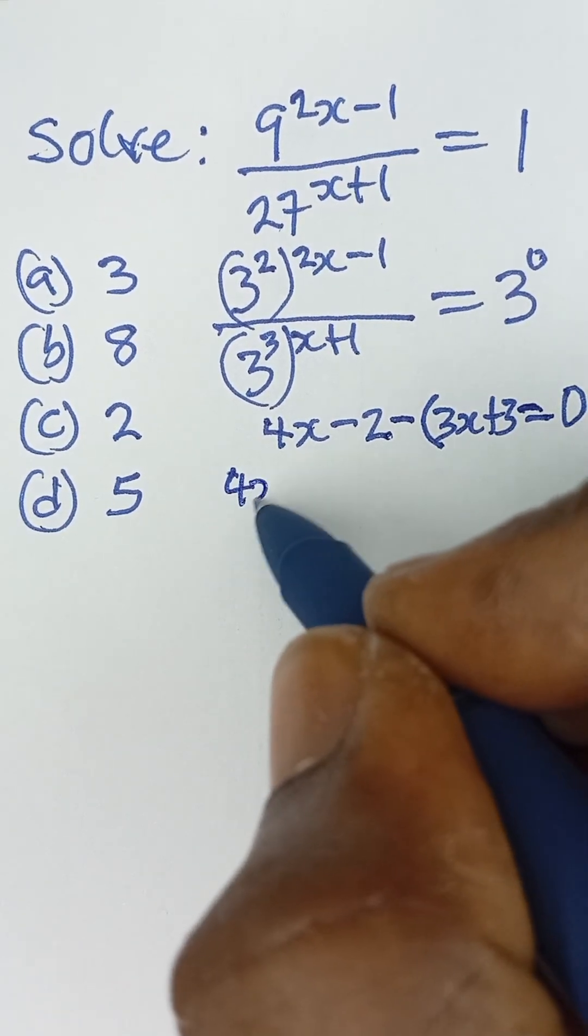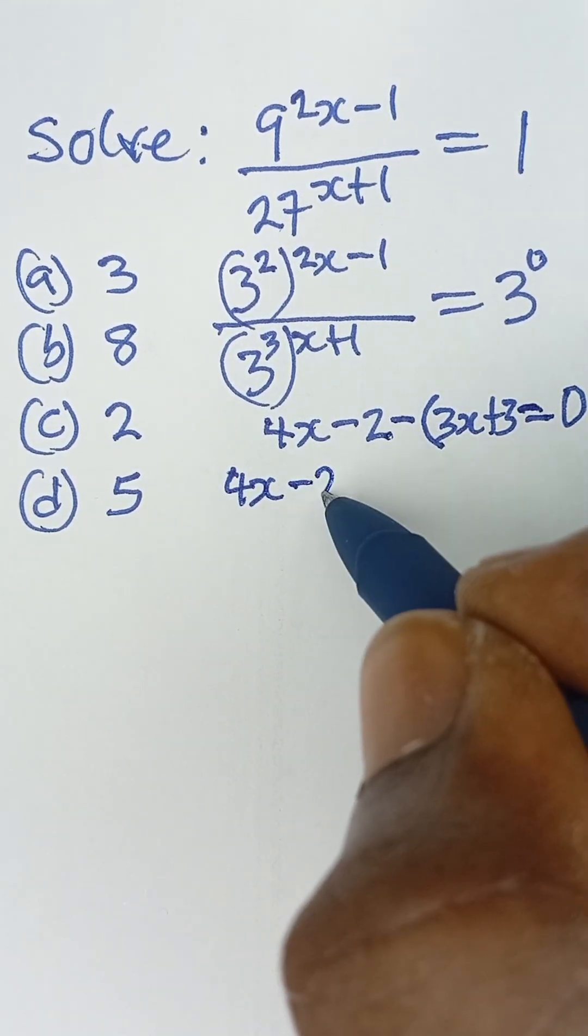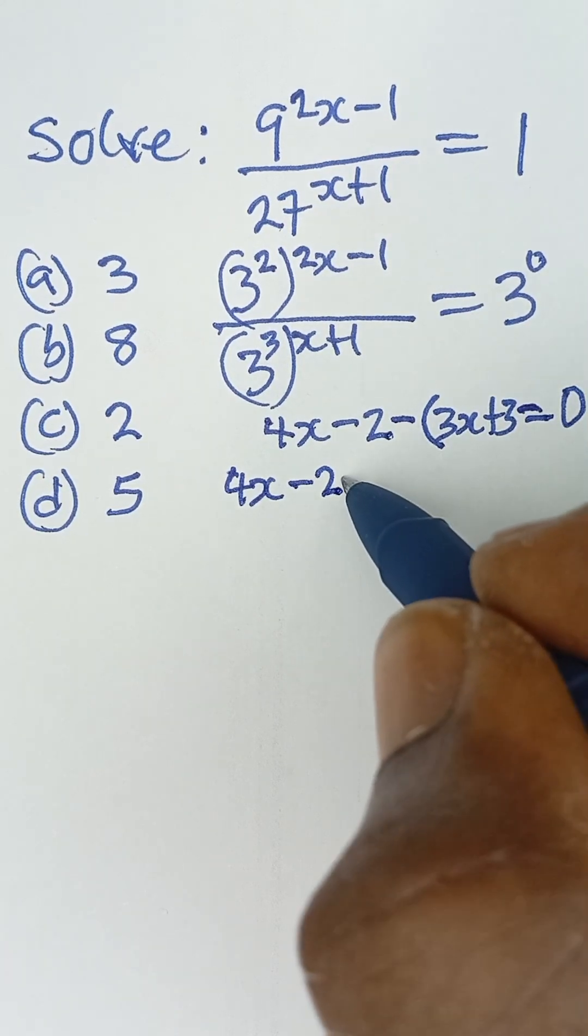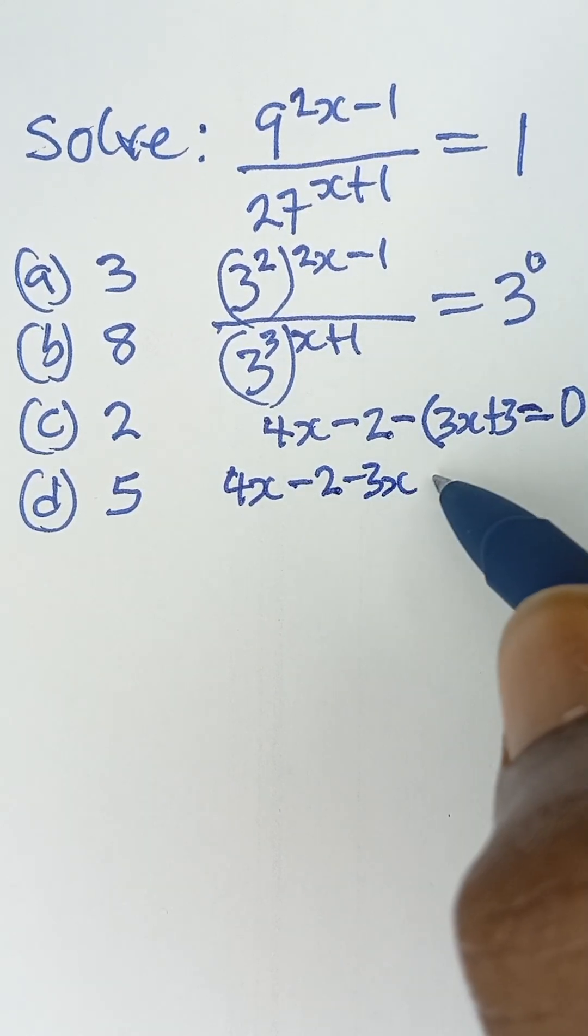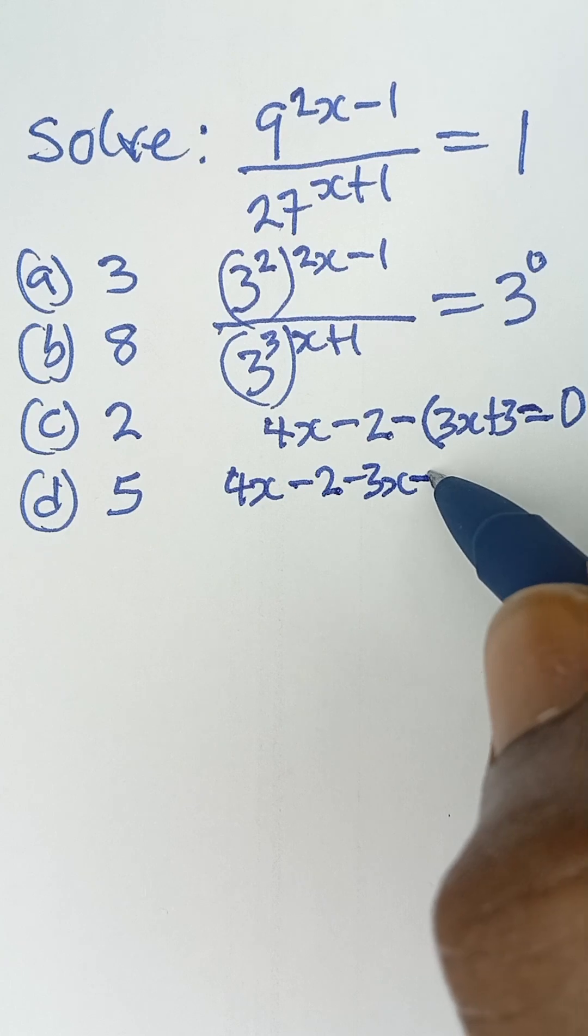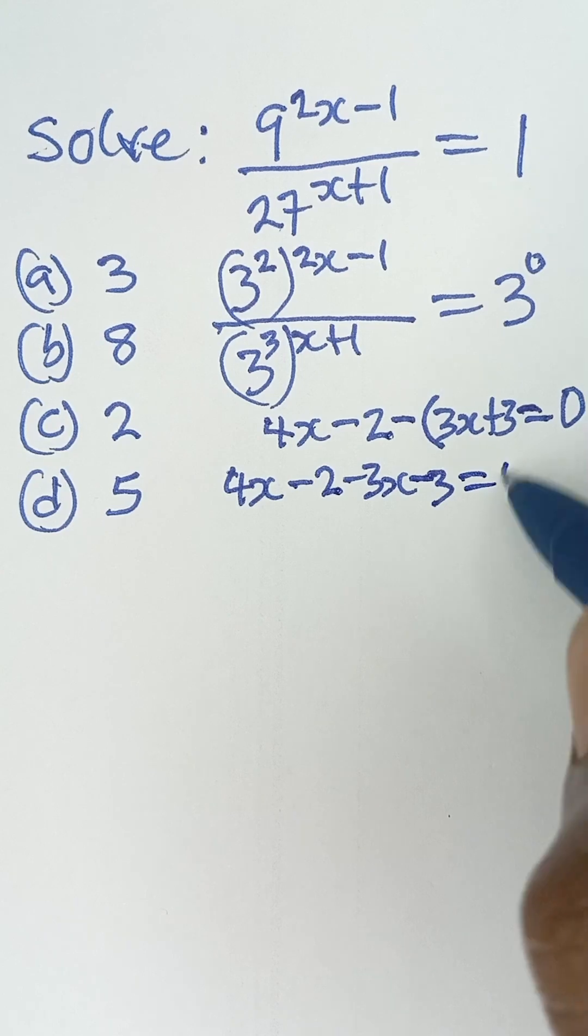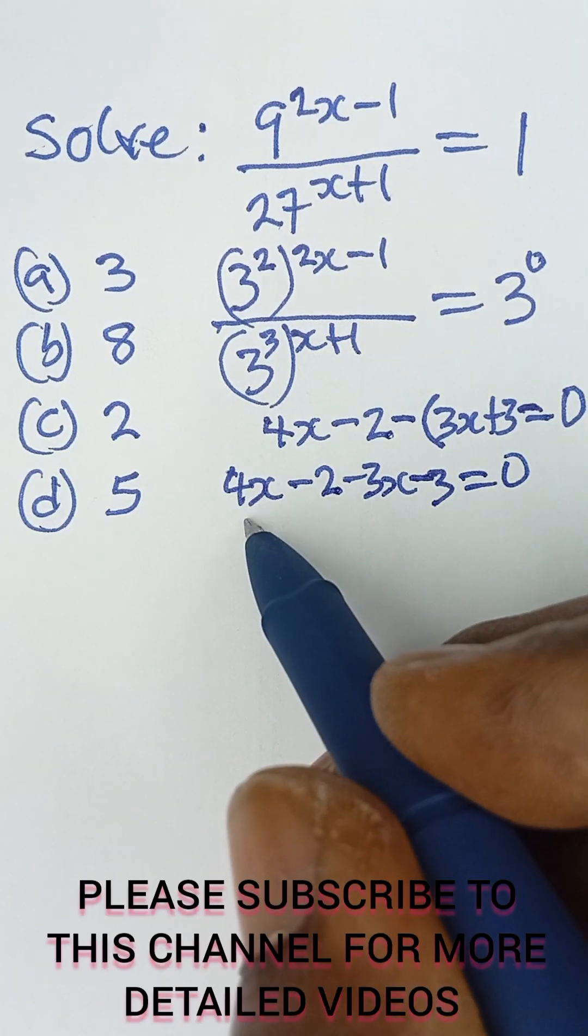4x minus 2, and then minus 3x minus 3, and that will be equal to 0. So 4x